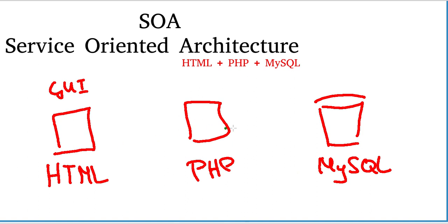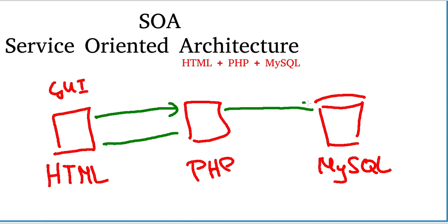How do they communicate? Probably over some TCP connections. The website maybe has an HTML form that asks the PHP server — the web server — and the web server does something, the PHP scripts do something, and then they return the result. Maybe the PHP scripts also make a connection to the MySQL server, and the MySQL server will answer in some way.